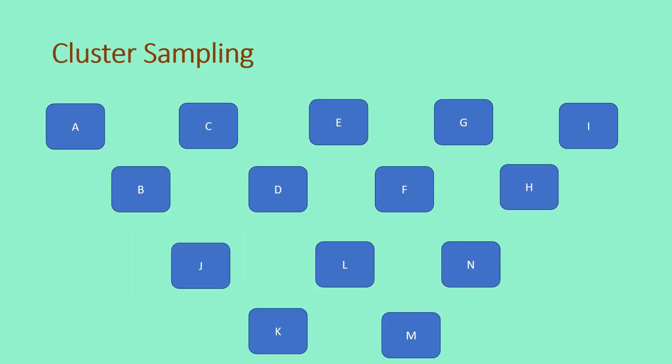Let us now proceed with the discussion about cluster sampling. This method is also known as area sampling. It is usually used when the population is very large. In this technique, the individuals that comprise the population are grouped and they will now be called as clusters. Next, the clusters will be chosen randomly to identify the clusters which will be involved in the study. For example,